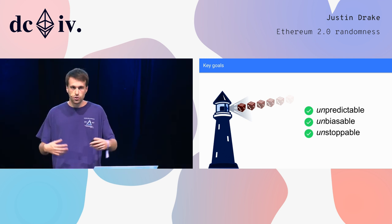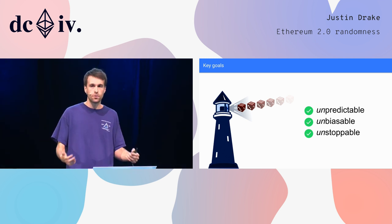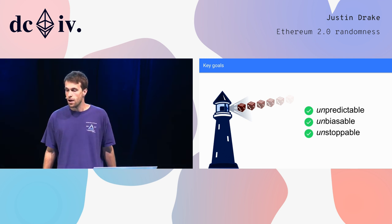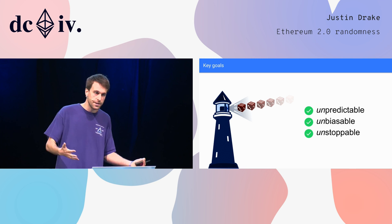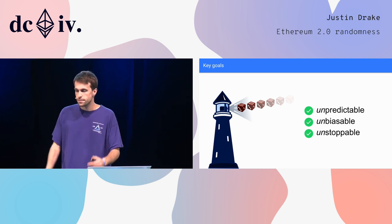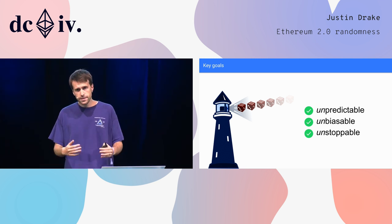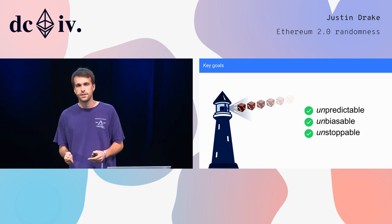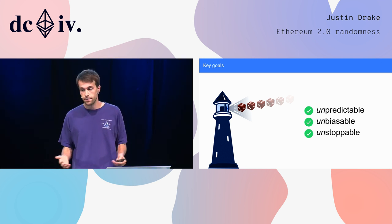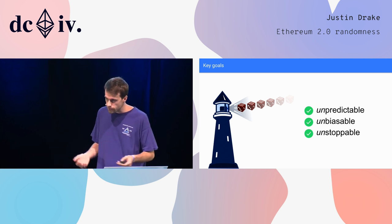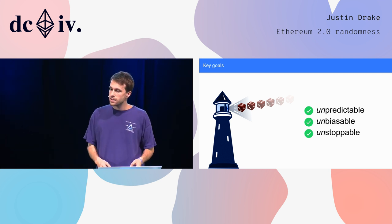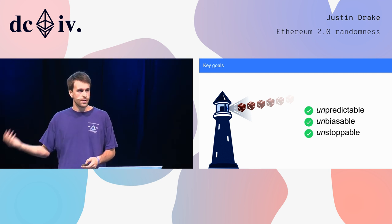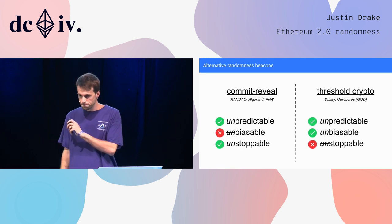So what are the goals for the randomness beacon? We want it to be unpredictable, of course. We want it to be unbiasable — and it turns out that's much more difficult to do — and we also want it to be unstoppable.